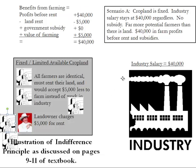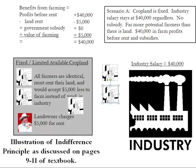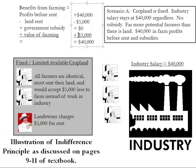This shows how the indifference principle works: when people aren't indifferent and everybody prefers one option, prices change — usually bidding up the price of something — until people are indifferent between different actions. In this case, because land rent has gone up to $5,000 — which is no coincidence, as it equals Rent's personal value of farming — people are now indifferent between working in the industry and becoming farmers.